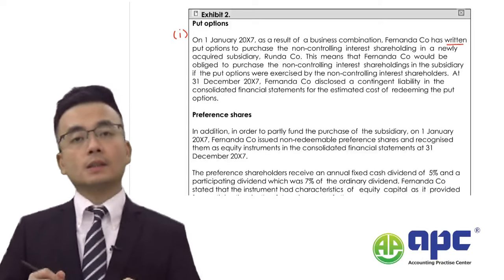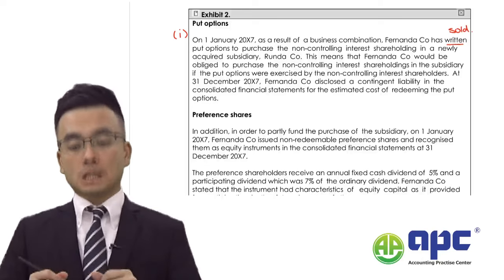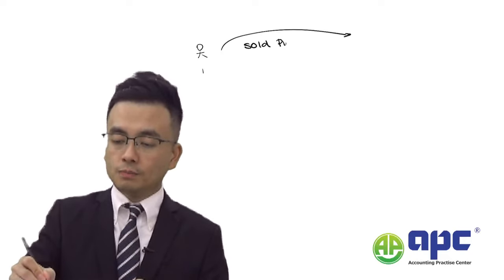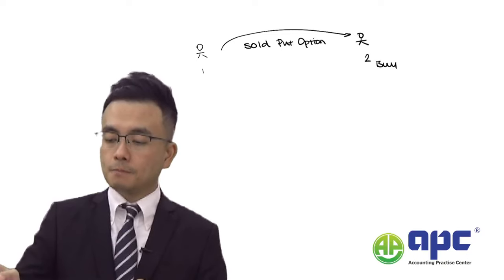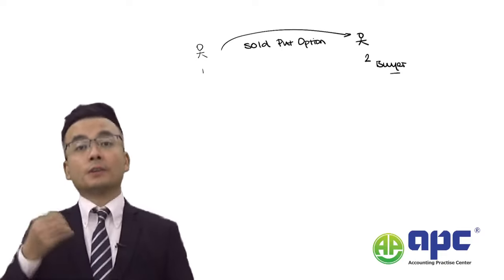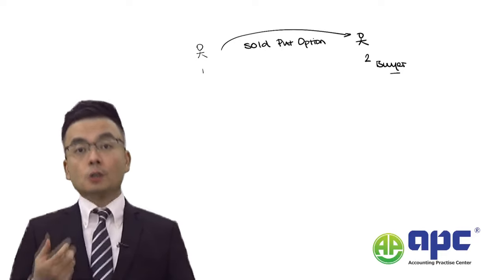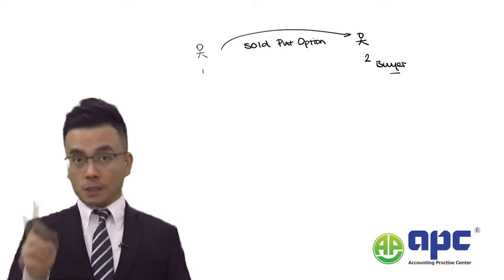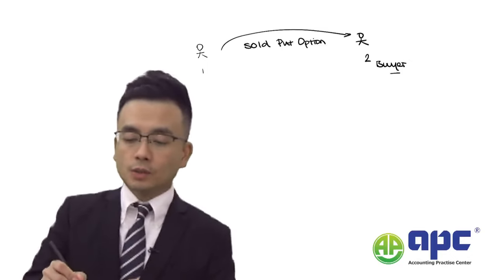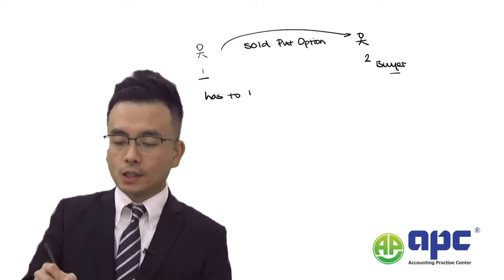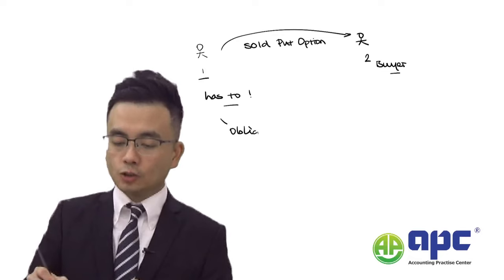If a party — party one — writes and sells a put option to a buyer — party two — the buyer has a choice whether to exercise it. If party two decides to exercise the put option, party one has to exercise it. This creates an obligation for party one — it seems like a liability.